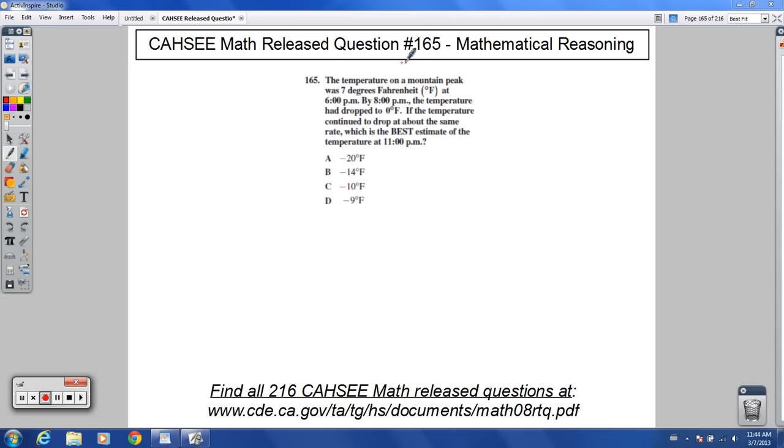Welcome to release question 165 for Cassie Math. The temperature on a mountain peak was 7 degrees Fahrenheit